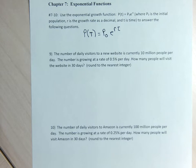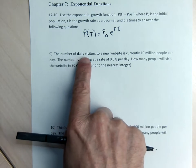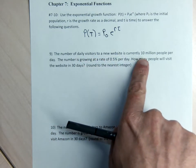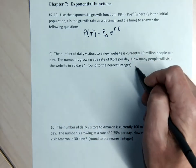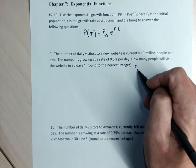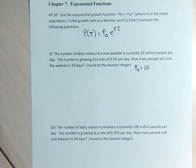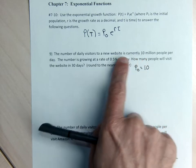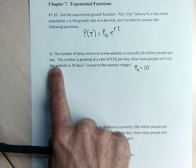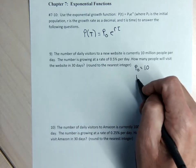For problem 9, it talks about the number of daily visitors to a new website being currently 10 million people. That's going to be the starting number, so my P sub zero is going to be 10, which represents 10 million people. I'm not going to use the word million until the very end. The number is growing at a rate of 0.5% per day, and T is time in days.